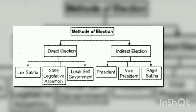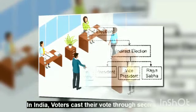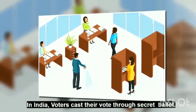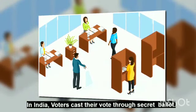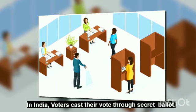In India, methods of elections are two types: direct election and indirect election. Secret ballot — in India, voters cast their vote through secret ballot. Thus, a voter is able to cast his or her vote maintaining confidentiality.